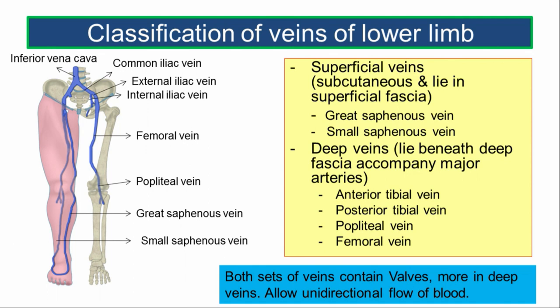We can classify the veins of the lower limb as superficial veins — those which lie subcutaneously in the superficial fascia, including the great saphenous vein and the small saphenous vein. The deep veins lie beneath the deep fascia and accompany the major arteries. Below the knee, the deep veins are seen as venae comitantes, a pair accompanying the arteries, whereas above the knee joint they are single named veins.